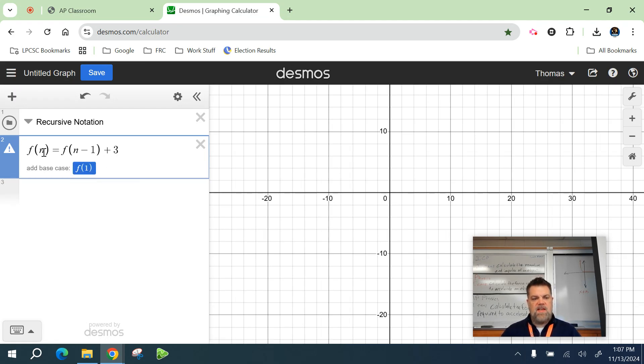So basically what this is saying is whatever my previous number was, I'm going to add three to it to get the next number. So now that I have that put in, this is my recursive notation. This is my first term in the sequence, right?